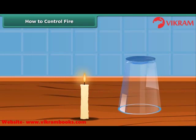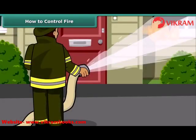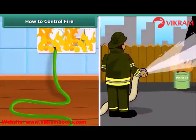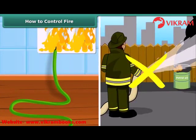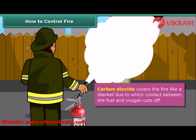Now we will see how fire can be put out. Fire needs oxygen, heat and fuel to exist. However, it can be extinguished by removing any one of them. You must have seen firemen throwing water on fire and the fire gets extinguished. Water brings the temperature of the combustible material below its ignition temperature and cuts off the supply of air. But water is not a good extinguisher for electrical or oil fires. For electrical and oil fires, it is best to use carbon dioxide as an extinguisher. Carbon dioxide, being heavier than oxygen, covers the fire like a blanket, cutting off contact between the fuel and oxygen.